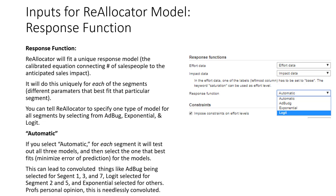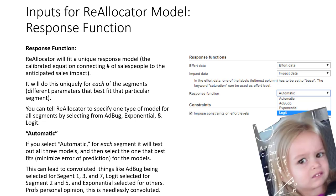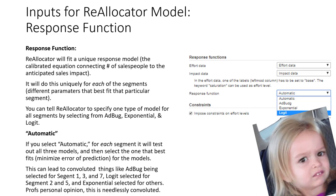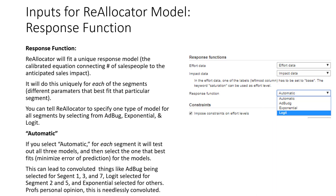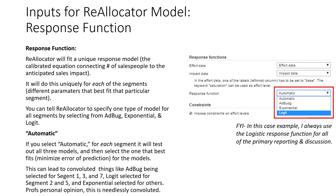Automatic selection sounds appealing, but there is a potential downside: it implies that entirely different mathematical formulations might be used across different segments — exponential in markets two and three, logistic in markets eight and nine, and so on. This could be needlessly complex in many situations, rather than relying on a single formulation. For this particular case study, I always fit a logistic response function to all 14 of the geographic markets.